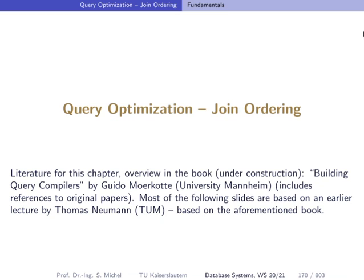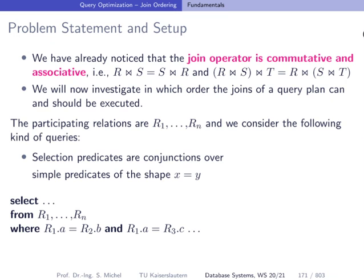Join ordering is part of query optimization, and the task is to find the cheapest or a cheap join ordering for a given query. When we say join query, we mean multiple relations connected by join predicates. Here we consider simple equality predicates that test if two attribute values are identical. If all predicates in the conjunction are true, the concatenation of those tuples forms one tuple in the join result.